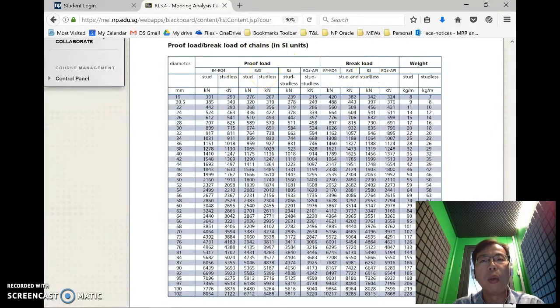Proof load means the safe working load while breaking load means the ultimate tensile strength. As well as there's this portion on the weight of the chain. There are the various diameters indicated on the leftmost column and the various forces and unit weights on the right.